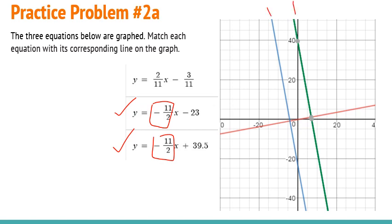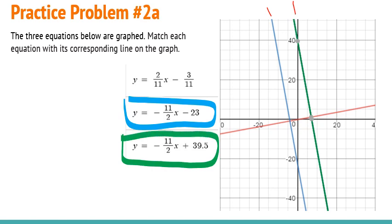So it's got to be these two lines here that are going negatively. So which one is going to hit at negative 23? Well, that's going to be this one here. So the blue one is this one. And then that means that the green one is this one. Because they both have the negative slope and the only difference is where their y-intercept is. So that means the red one here has to be this one.